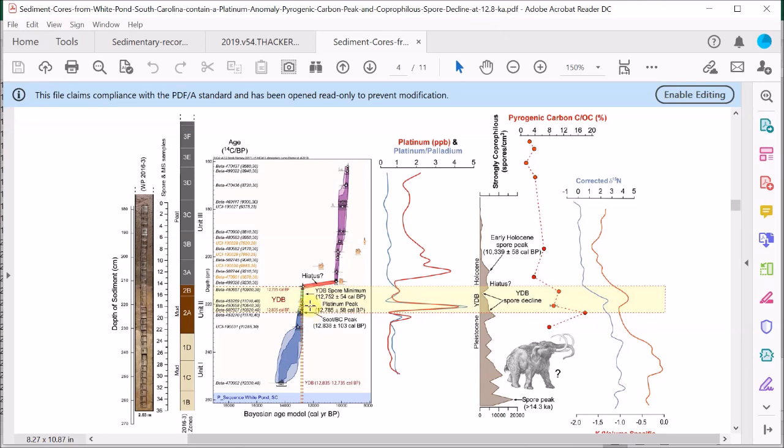And at this same time, we see within the sediment core first a layer of soot, and then slightly above it a layer of platinum.